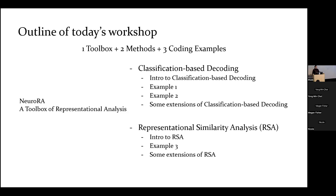I will also introduce some advanced extensions of the classification-based decoding. For the second method, RSA, I will also give a brief introduction using a third example. We will do the coding together to import the data and do the RSA to get final results. All the examples today are based on EEG data because EEG is easy to run for a workshop — for fMRI we need to spend a lot of time. But I hope after this workshop you can generalize the knowledge to fMRI.